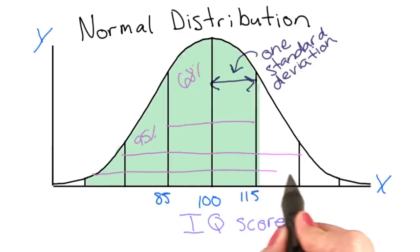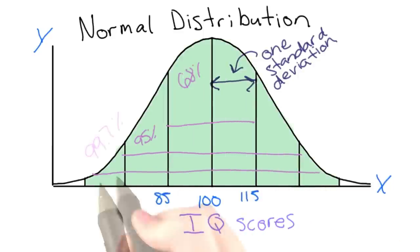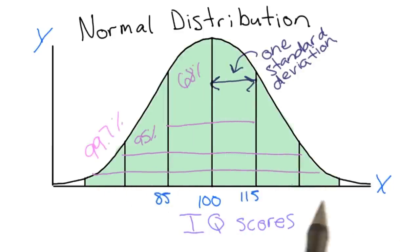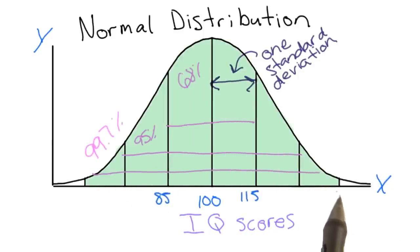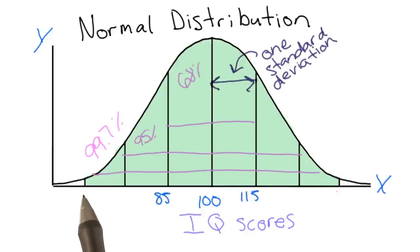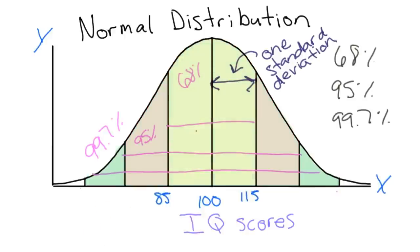Next, we see that 99.7% of the population fall between three standard deviations above the mean and three standard deviations below the mean.